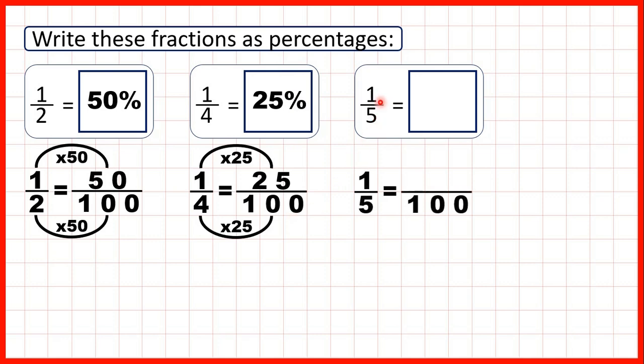Now we have 1 fifth. 5 times 20 is 100, because if we count up in 20s 5 times, we get 20, 40, 60, 80, 100.